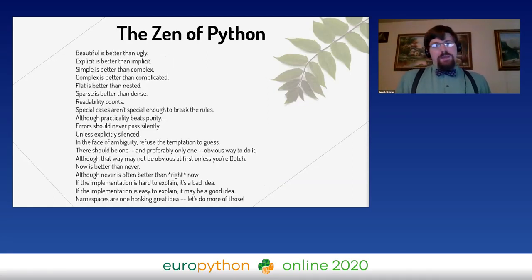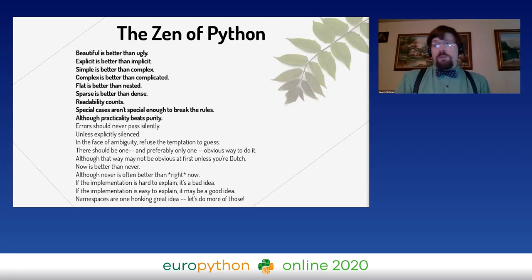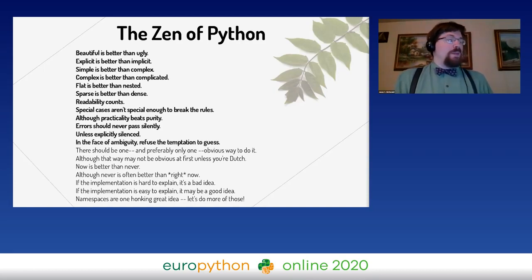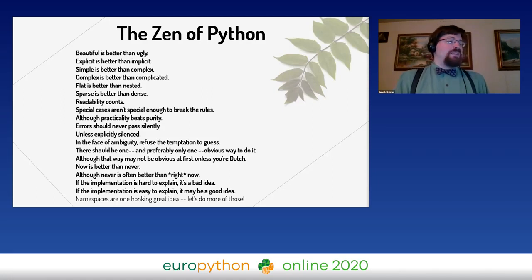In case you've never read the Zen of Python, or if it's been a while, I'll read it to you now. Beautiful is better than ugly. Explicit is better than implicit. Simple is better than complex. Complex is better than complicated. Flat is better than nested. Sparse is better than dense. Readability counts. Special cases aren't special enough to break the rules, although practicality beats purity. Errors should never pass silently unless explicitly silenced. In the face of ambiguity, refuse the temptation to guess. There should be one and preferably only one obvious way to do it, although that way may not be obvious at first unless you're Dutch. Now is better than never, although never is often better than right now. If the implementation is hard to explain, it's a bad idea. If the implementation is easy to explain, it may be a good idea. Namespaces are a one honking great idea — let's do more of those.